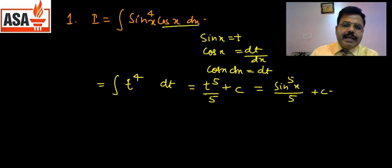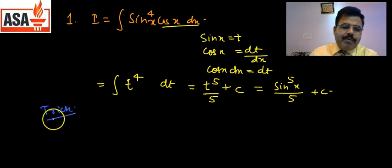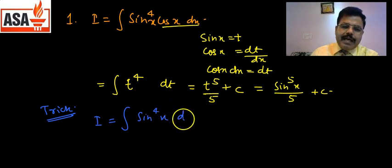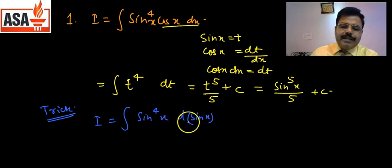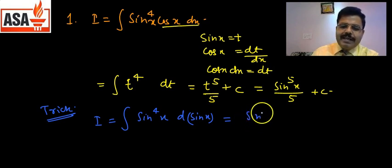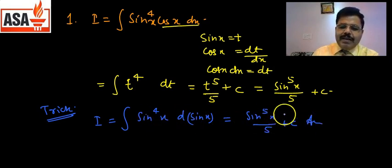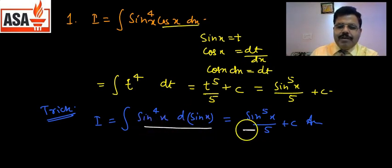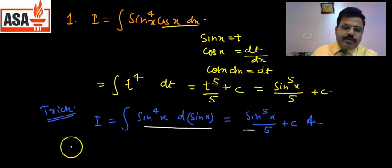इस तरीके से objective question को दिमाग में रखें — trick यह है: sin का power 4x है और cos x उसका derivative है, तो यह t⁴ dt type है। Answer: sin⁵x / 5 + c। यह question में लिखा होगा और option में होगा। ऐसे questions को बड़ी आसानी से कर सकते हैं।